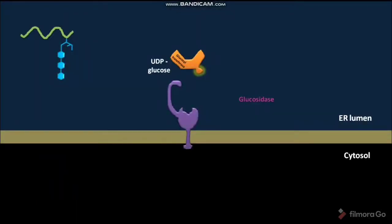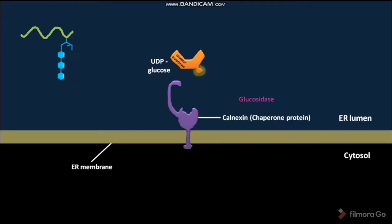In a eukaryotic cell, the ER membrane has a protein called calnexin. This calnexin is bound to the ER membrane and is a chaperone protein.